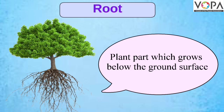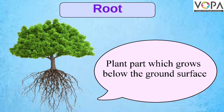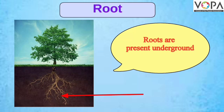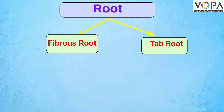Root can be defined as the plant part which grows below the ground surface. It means that roots are present underground. There are two types of root: tap root and fibrous root.